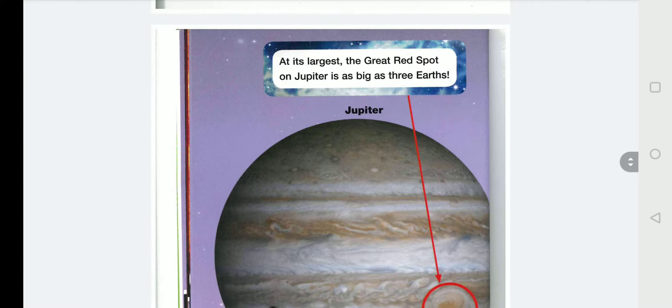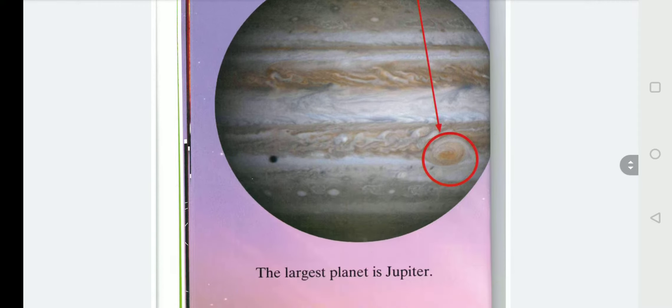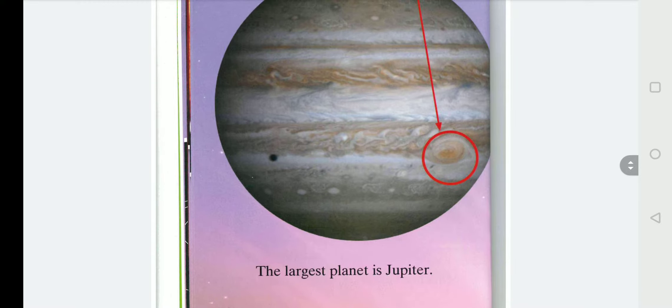At its largest, the great red spot on Jupiter is as big as three Earths. The largest planet is Jupiter. So you can compare the size of Jupiter to Earth. It is much bigger.